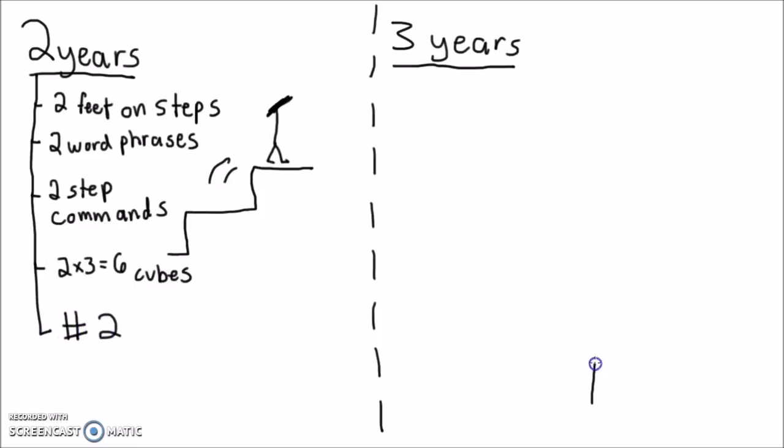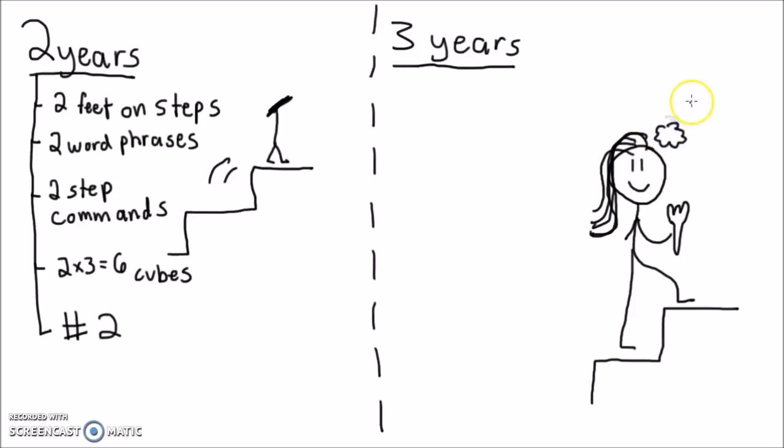At three years a toddler should now be able to go upstairs with alternating feet. As you can see by the head they should also be able to copy a circle. I've drawn the hair to indicate that the child should also know what age/gender they are. They can also use utensils and engage in imaginative play.